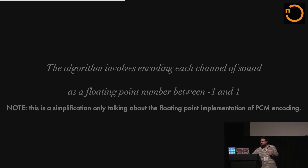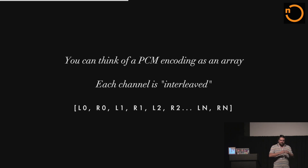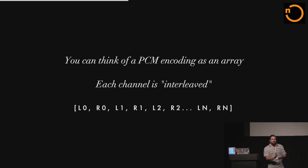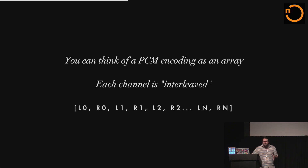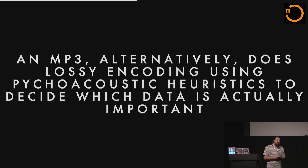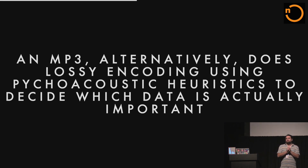The PCM algorithm involves encoding each channel of sound into a number between minus 1 and 1, and those numbers are interleaved — left sample, right sample, left sample, right sample. That number between minus 1 and 1 is a representation of your speaker cone and whether it's out or in. All you're doing is sending electrical signals to the speaker for it to vibrate and recreate the vibrations in air that the sound originally made. PCM encoding is referred to as lossless because not much data is lost. As opposed to MP3, which is lossy — MP3 uses psychoacoustic tricks to delete data you're not going to use.